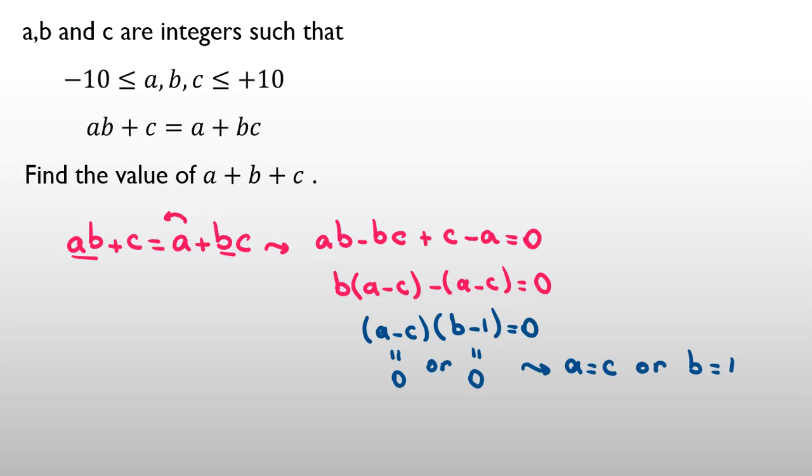And we know that a, b, c are between negative 10 and 10, greater than or equal negative 10, less than or equal 10. If a equal to c, we can say a equals c, and so it can be from negative 10, negative 9, to 10. And they are equal, and b also can be any number.